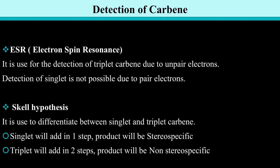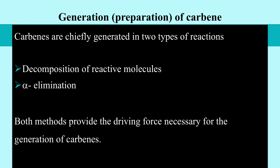Detection of carbene can be done through electron spin resonance (ESR), which is used for detection of triplet carbene since it has unpaired electrons. Detection of singlet carbene is not possible by ESR due to paired electrons. The second method is the Skell hypothesis, a chemical method used to differentiate between singlet and triplet carbene. Singlet carbene will add in one step and the product will be stereospecific, while triplet carbene adds in two steps and the product will be non-stereospecific.